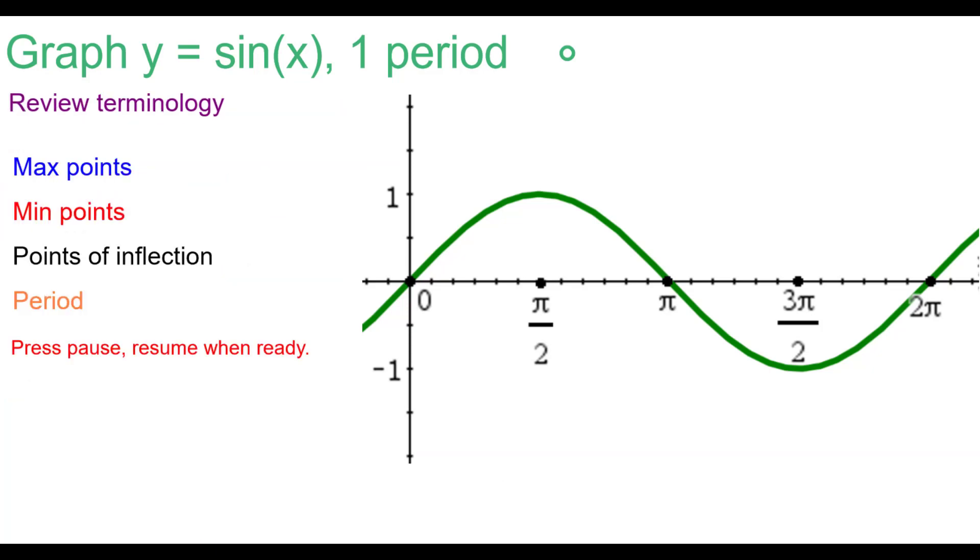We'll review some terminology. First of all, there is one maximum point in a period of sine function at π over 2, 0. Minimum point at 3π over 2, negative 1.